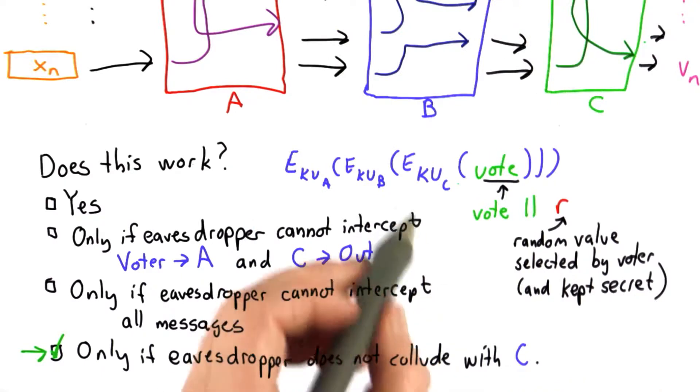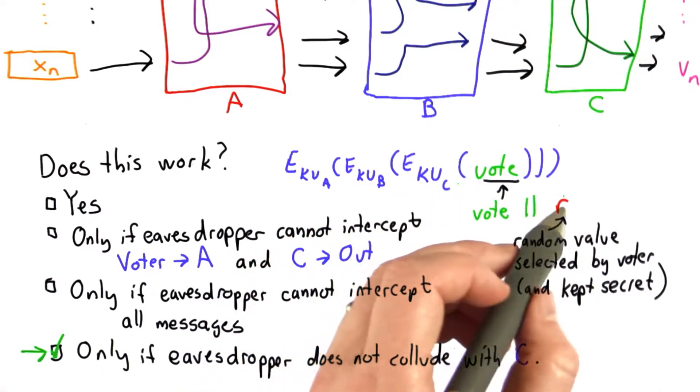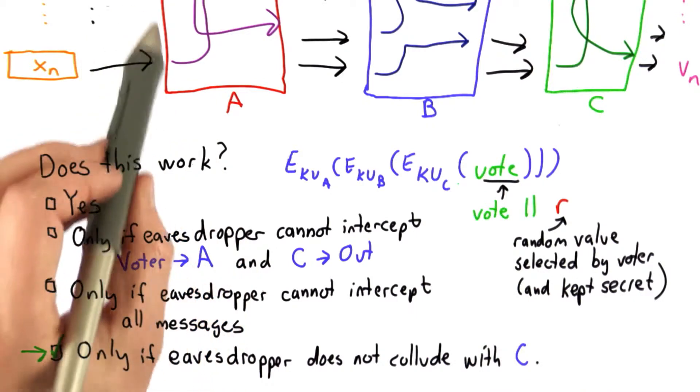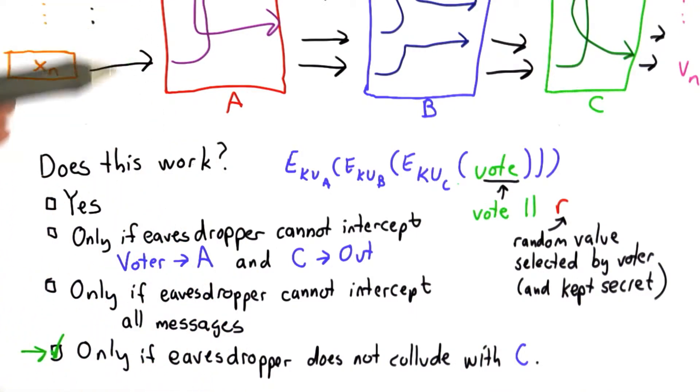If C decrypts the message, well C has the private key here so we'll learn the random value and can use that in collaboration with the eavesdropper who heard these messages now to figure out which voter voted for which candidate.